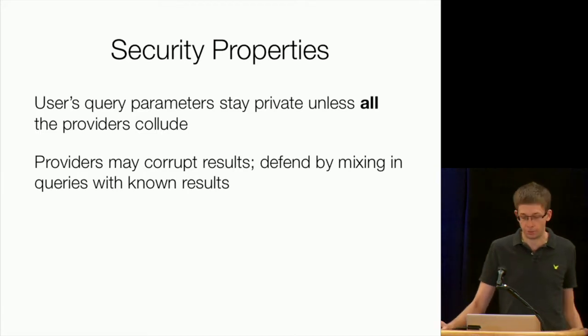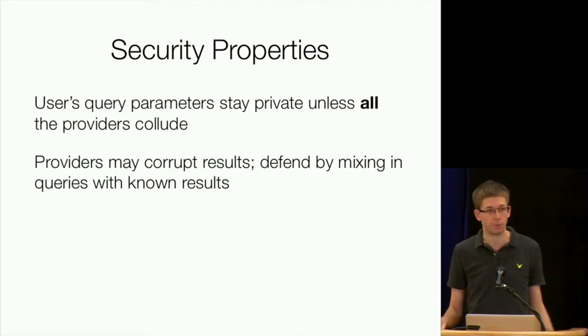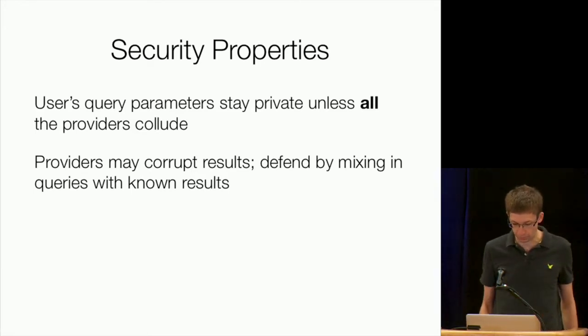If all the providers collude, then they can figure it out. But this is a pretty powerful model. Basically, you can connect to your three favorite sites, maybe in different countries, and as long as one of them is not compromised, you can run these queries privately on a shared dataset. So the parameters of your queries stay private unless all the providers collude. One thing I'll note is that malicious providers can still corrupt the results by just not following the protocol, giving you back some kind of junk. And so if you want, you can try to defend against that. But the main thing we're looking at here is protecting your queries, not protecting you from invalid results.